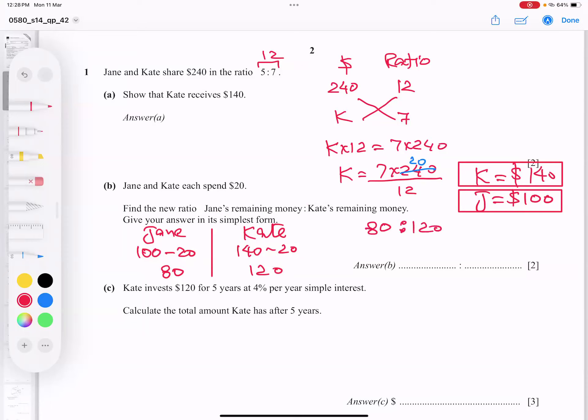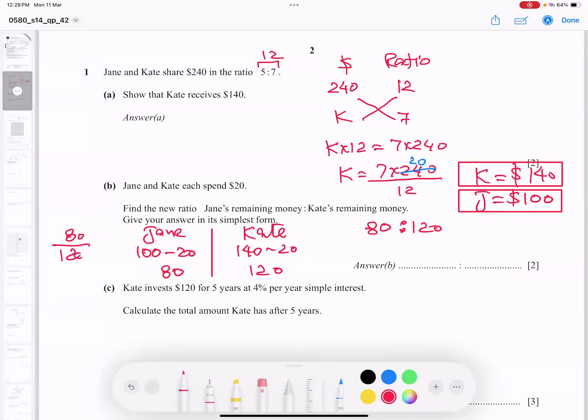So 80 ratio 120. You have two techniques. I can divide by 10. I can get rid of zeros and then divide some other number. Or I can type directly in calculator. 80 divided by 120.